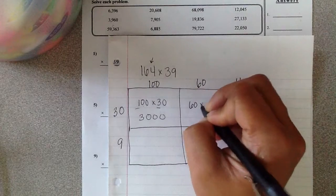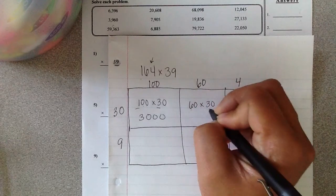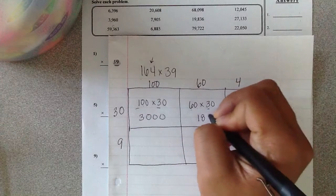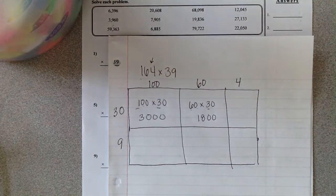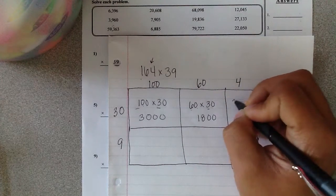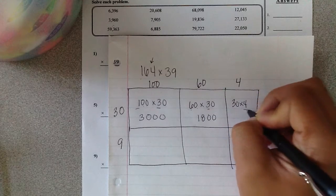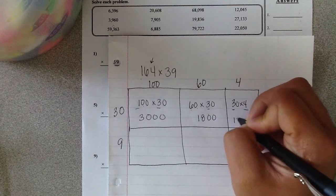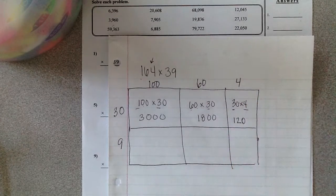60 times 30. 6 times 3 is 18, and I have one, two zeros, so I'm going to add two zeros to my product. I have 30 times 4. 4 times 3 is 12. Add my one zero there.